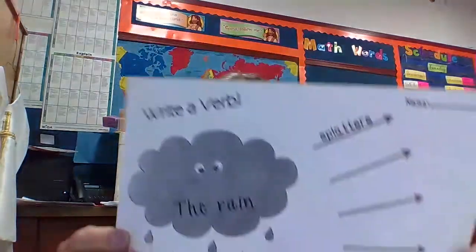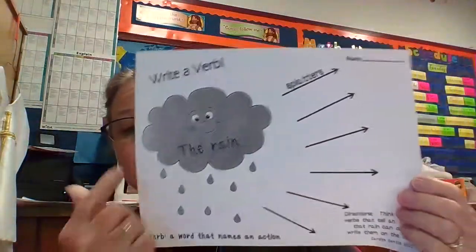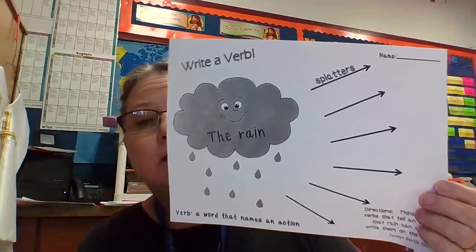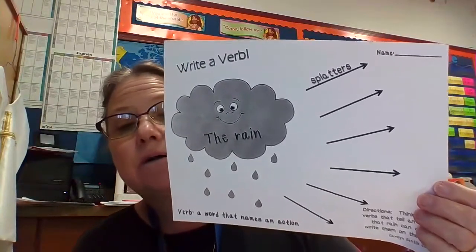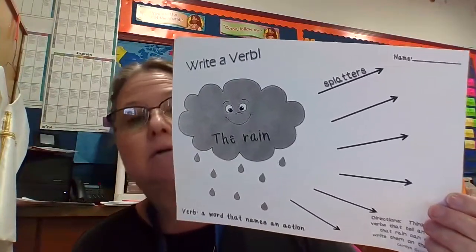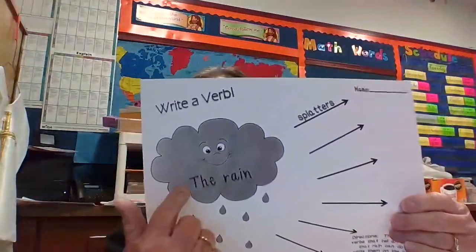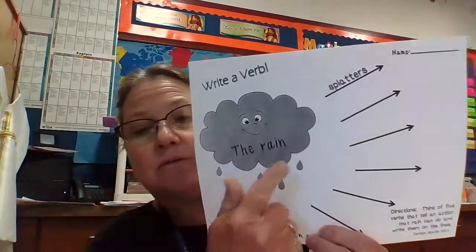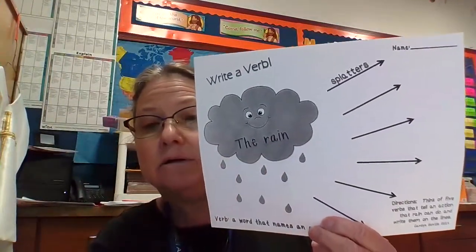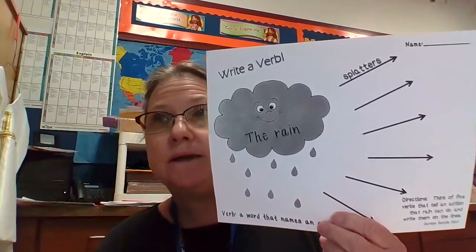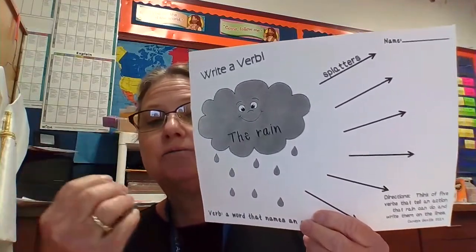So for your writing today, you have this picture that has this beautiful rain cloud, and the picture says the rain. The rain is part of my noun. Rain is a noun. We can touch it, we can feel it, we can see it. Rain is a noun.